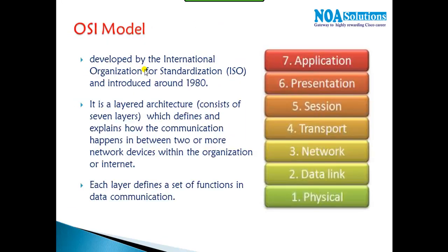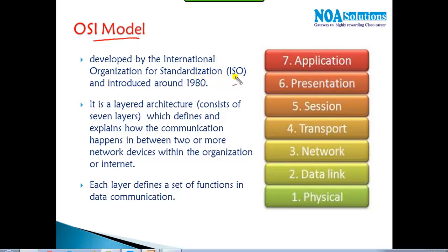The OSI model has seven different layers. It is a theoretical model developed by ISO — the International Organization for Standardization — introduced around the 1980s. It provides a seven-layer architecture which explains how communication is going to happen between two or more networking devices.